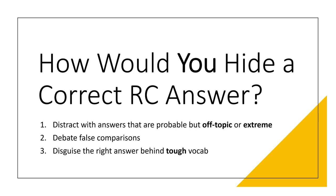First, you can distract students with answers that are probably true, but they're either off-topic or too extreme. You distract people from the correct answer by giving them plausible answers that are probably true — they're just not discussing what the question was asking, or they're on the right lines but go a bit too far.